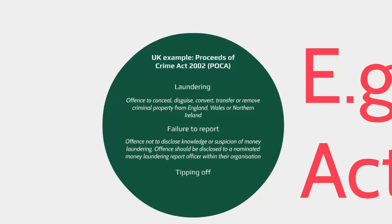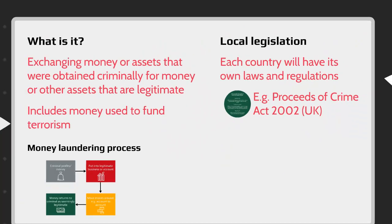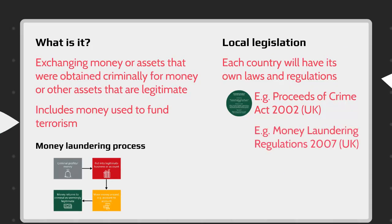The third offence is tipping off. It is an offence to disclose information to a party which could influence the investigation — for example, pre-warning the offender about a report that's been made to the National Crime Agency.